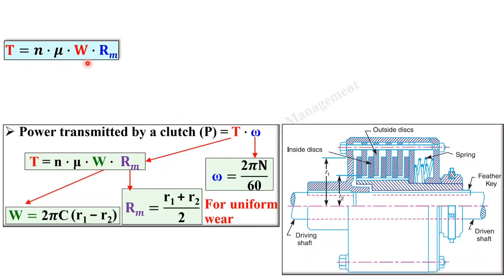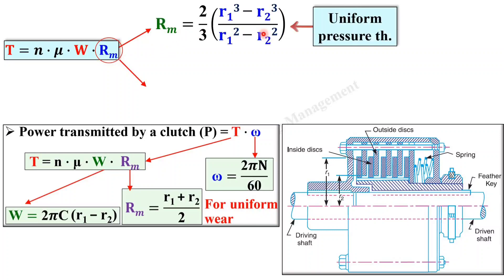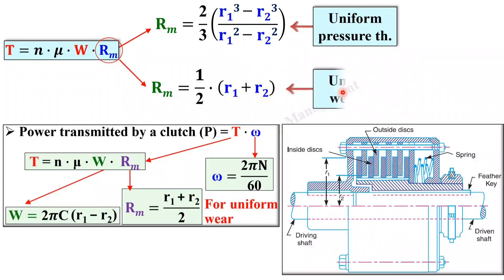This is the simple equation for the torque. There are two formulas for rm: one is especially for the uniform pressure theory and the other is for the uniform wear theory. In this problem, we are going to apply the uniform wear theory, so rm = (r1 + r2) / 2.